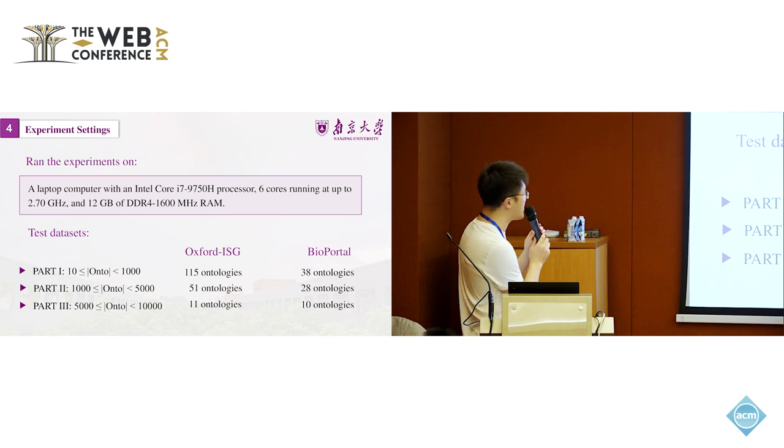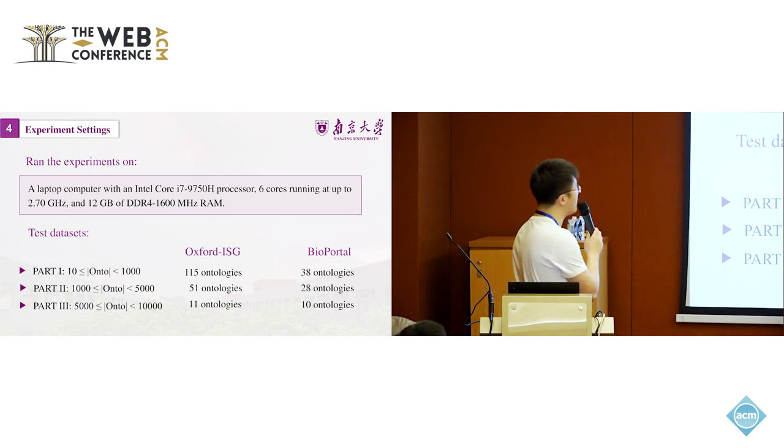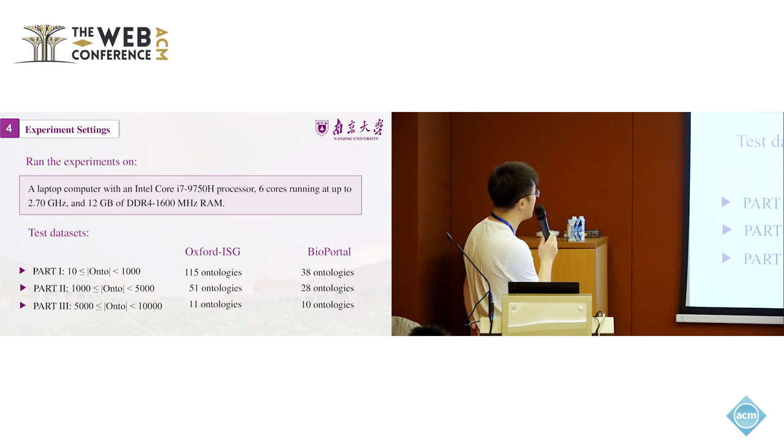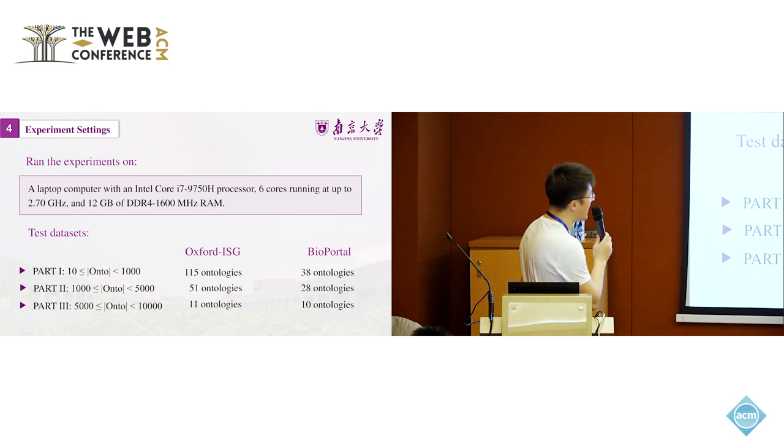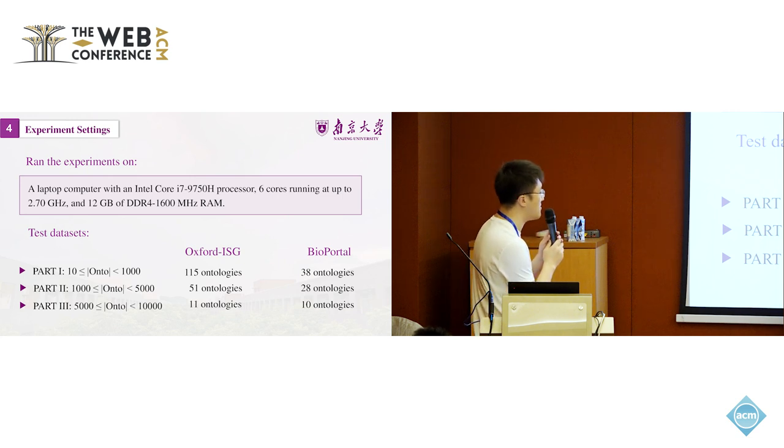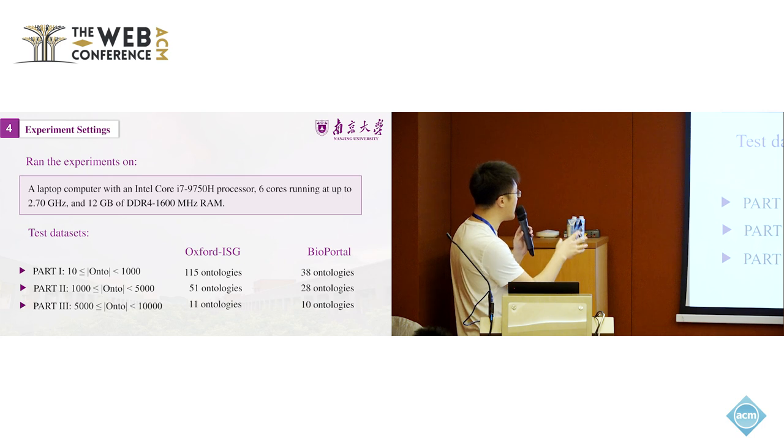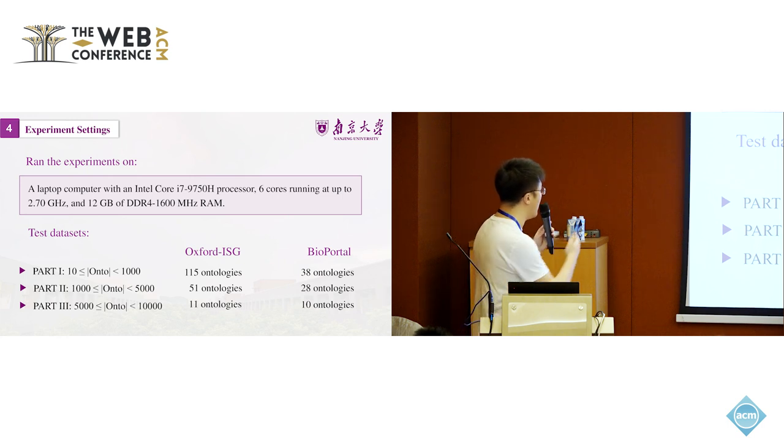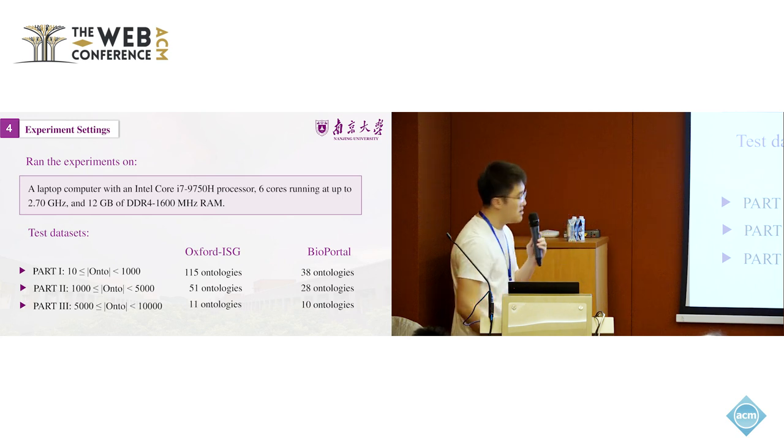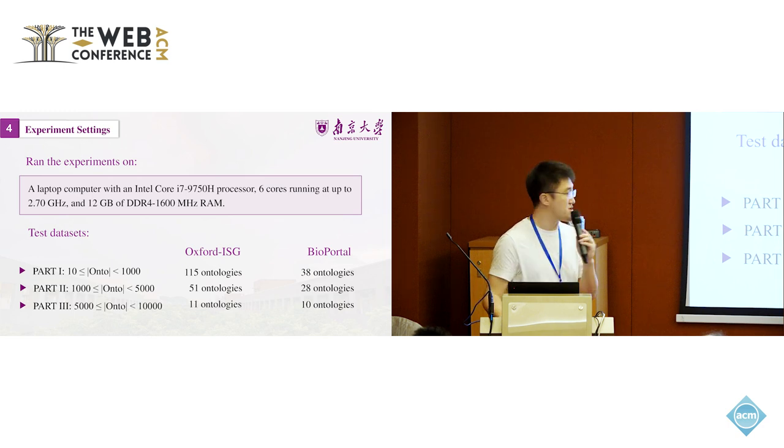Our experiments. The actual experiment is run on an average laptop computer. The test datasets we used were the Oxford ISG ontology repository and also the NCBO BioPortal, which are benchmark ontology repositories that we really use for testing the performance of reasoning methods. We also partition these ontologies into three types with the size of ontology. The size denotes the number of axioms in this ontology. It's quite a large corpus of ontologies from both sources.